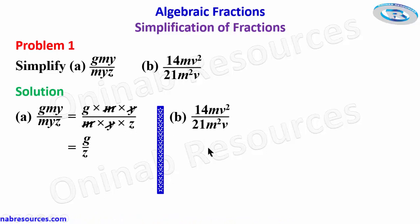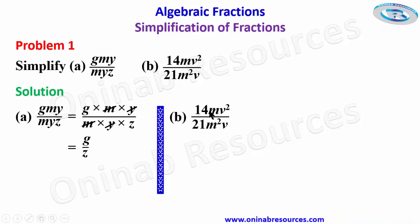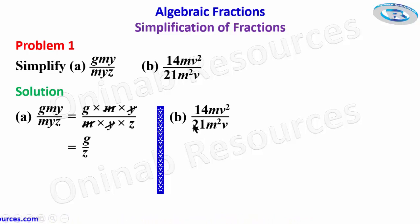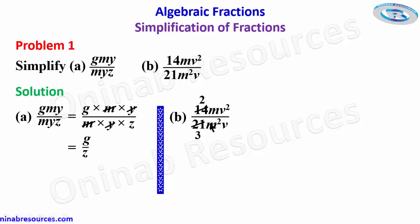For part (b) we have 14mv² over 21m²v. We start with the coefficients first. The coefficient at the numerator is 14 and at the denominator is 21. Their common factor is 7, so 21 divided by 7 gives 3, and 14 divided by 7 gives 2.